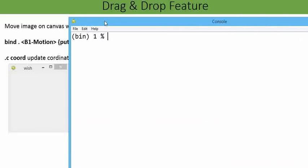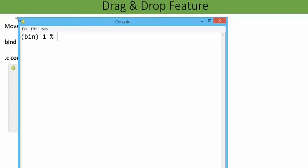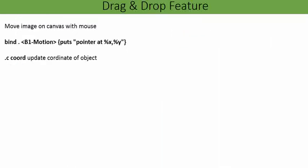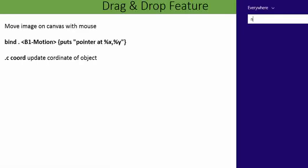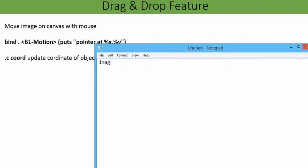It will be better if I take the help of a notepad. So first of all in the notepad I am going to create the image command. As we have seen in the last video: image create photo. Here I am going to give the name of the photo as 'and', with minus file and dot png. Let me make the text a bit larger.